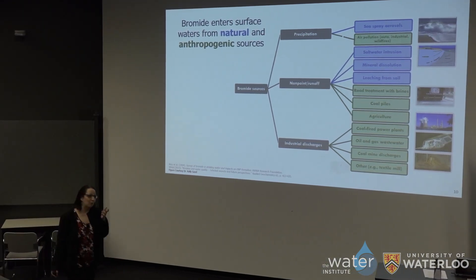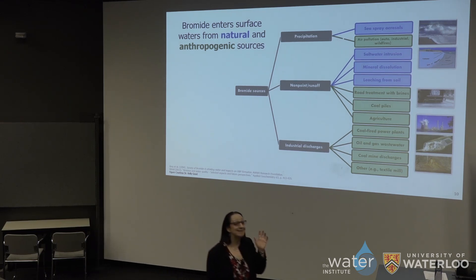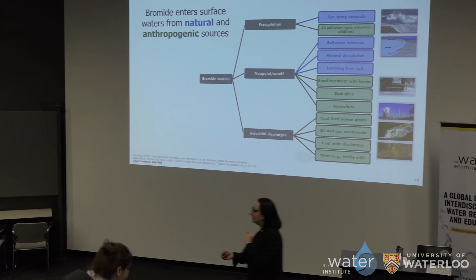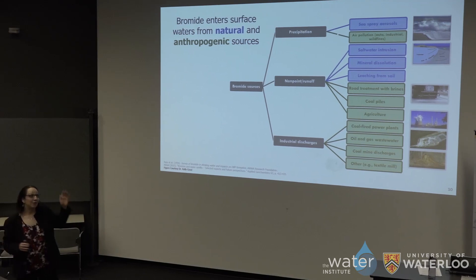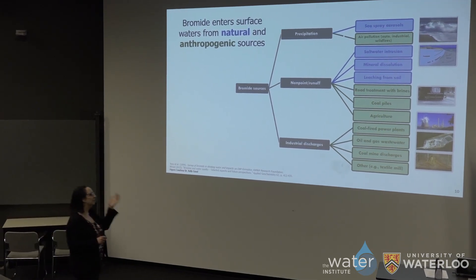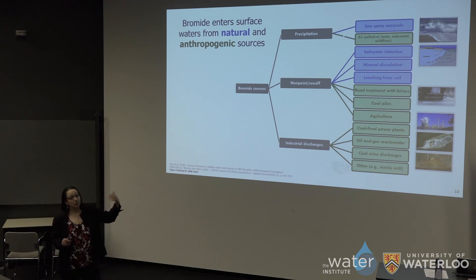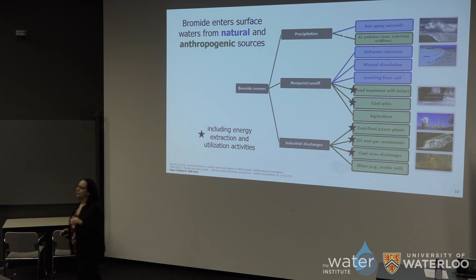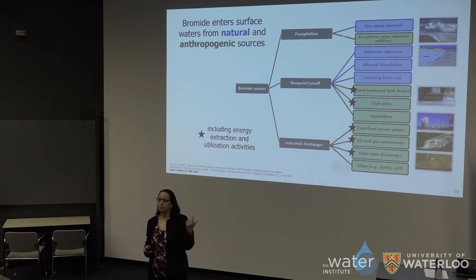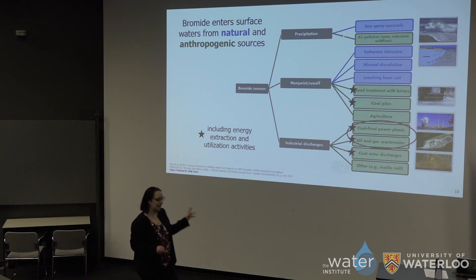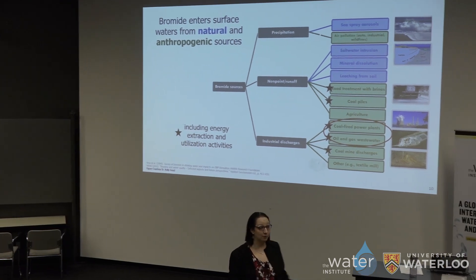Where does that bromide come from? Bromide is on the periodic table — it's an element, it exists in the world, and it's not going anywhere. It will move around and incorporate into organic or inorganic things, but it stays on the planet. Bromide starts in the crust, so it's not unexpected to see some from mineral dissolution or leaching from soils. It's present in the ocean, so ocean sea spray and groundwater intrusion often add bromide to drinking water sources. But the anthropogenic sources are what I'm focusing on today — those associated with fossil fuel extraction: road application of brines for dust control, coal piles leaching bromide, coal-fired power plants, and oil and gas discharges.